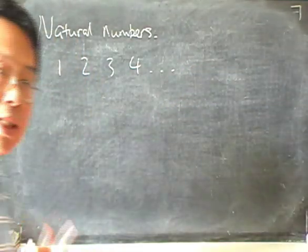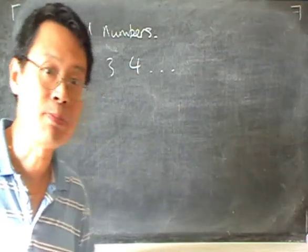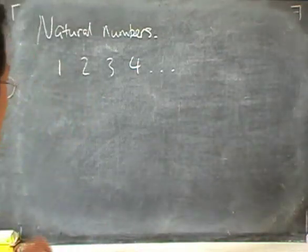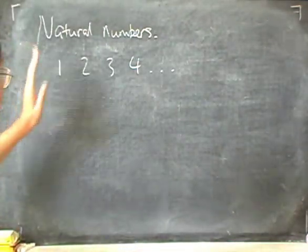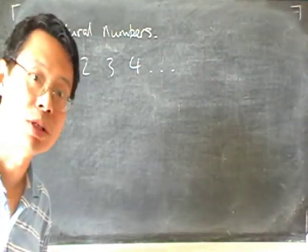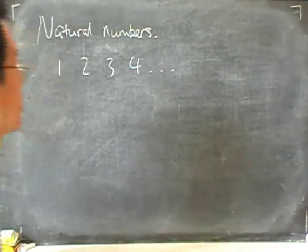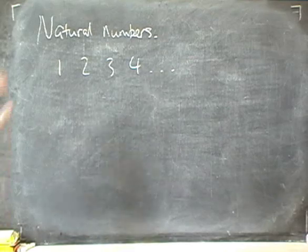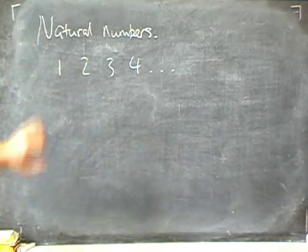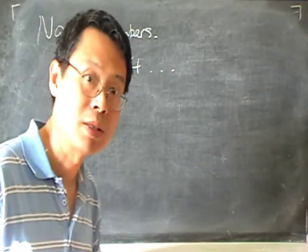Now, natural numbers, to be precise, does not include zero. So the set of natural numbers starts from one.